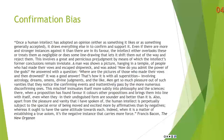I found this great quote by Francis Bacon where he talks about confirmation bias, though he doesn't give it that name: 'Once human intellect has adopted an opinion, either as something it likes or as something generally accepted, it draws everything else in to confirm and support it. Even if there are more and stronger instances against it than there are in its favor, the intellect either overlooks these or treats them as negligible or does some line drawing that lets it shift them out of the way and reject them. This involves a great and pernicious prejudgment by means of which the intellect's former conclusions remain inviolate. A man was shown a picture hanging in a temple of people who had made their vows and escaped shipwreck and was asked, 'Now do you admit the power of the gods?' He answered with a question: 'Where are the pictures of those who made their vows and then drowned?' It was a good answer. That's how it is with all superstition — involving astrology, dreams, omens, divine judgments, and the like. Men get so much pleasure out of such vanities, they notice the confirming events and inattentively pass by the more numerous disconfirming ones.'